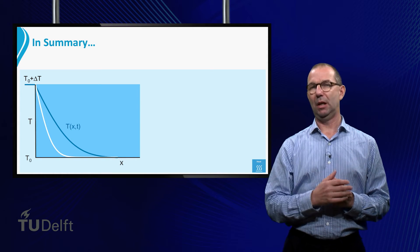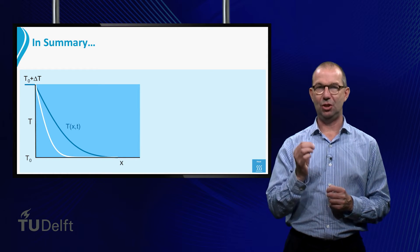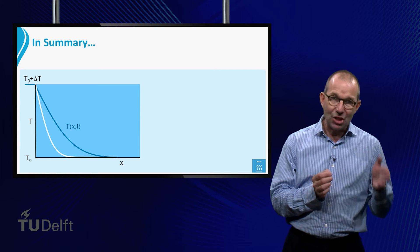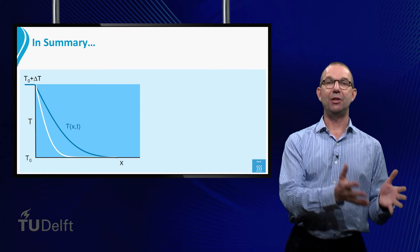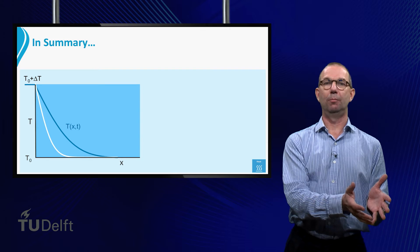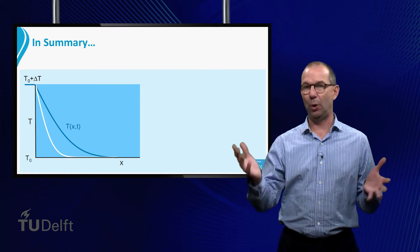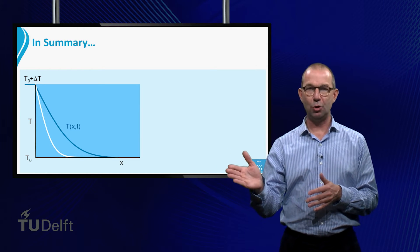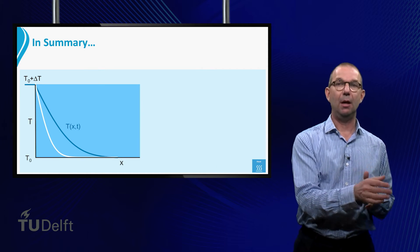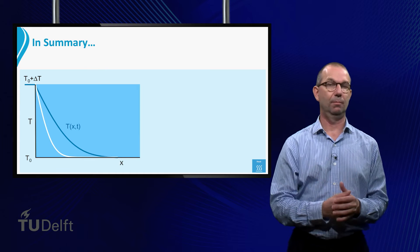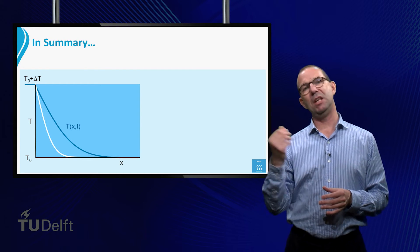It is important to realize that our analysis assumes that the right hand side of the plate is still at the original temperature T0. It has not yet changed its temperature. Obviously, at some point in time the heat will also have reached right hand side and our analysis breaks down. We will deal with that in the next lecture.